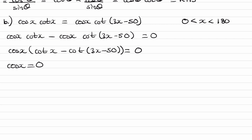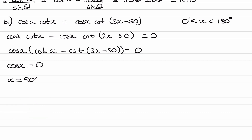We would have lost out on the solutions from cos x equal to 0. We're solving between 0 and 180. So inverse cos of 0 gives us x equal to 90 degrees. And if we think of our cos graph, there isn't another angle where cos x equals 0 between 0 and 180. So that's our only solution for cos x equal to 0.